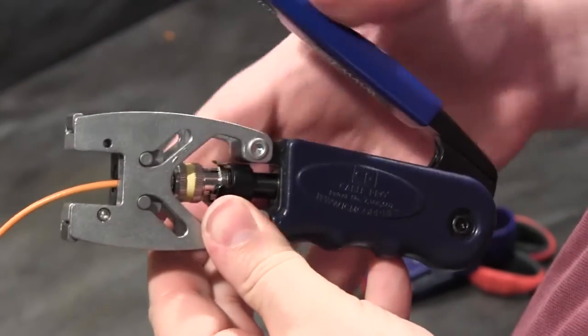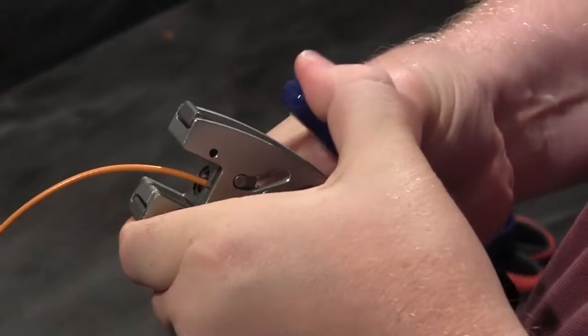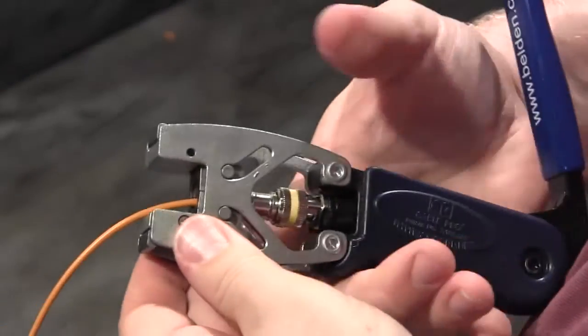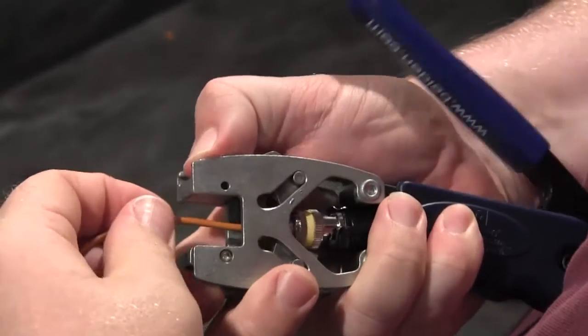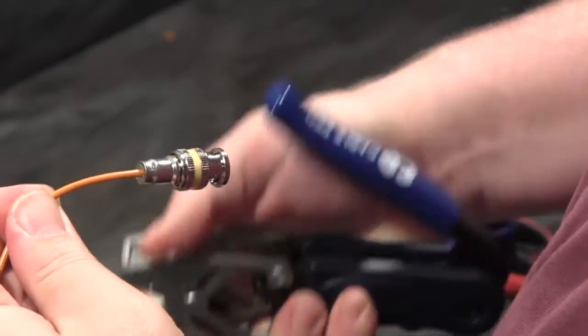The dies will do the work when I close the handle of the tool, which now I've done. I'll just do the reverse process to eject the connector, which has now been terminated onto the cable.